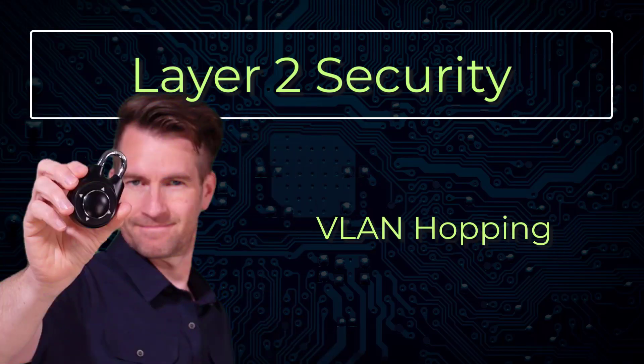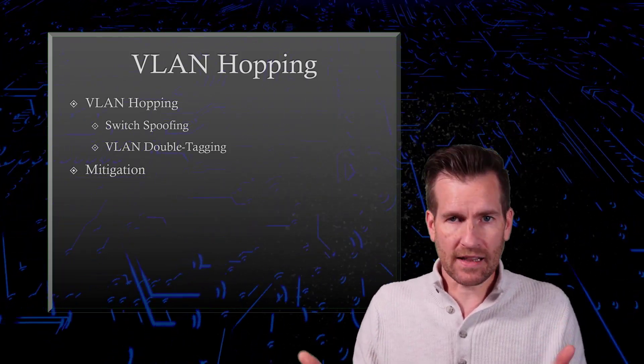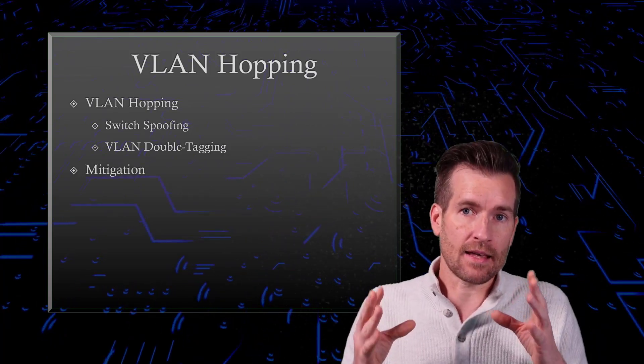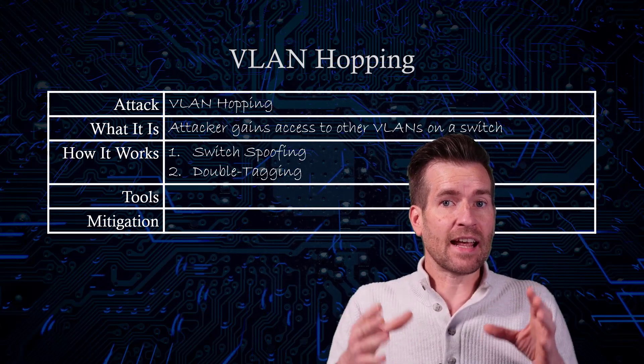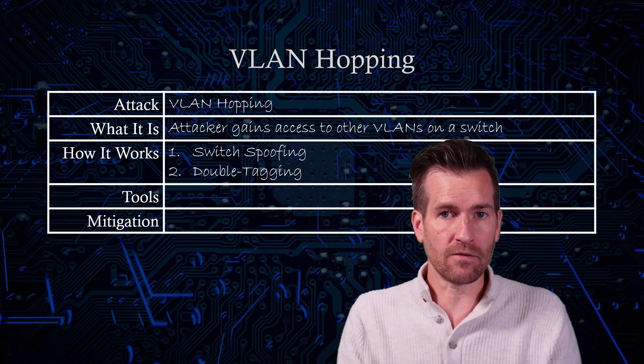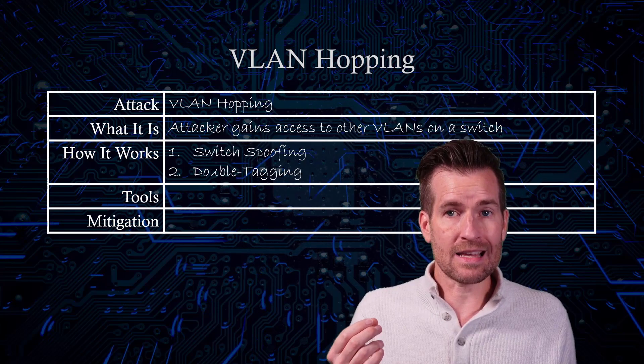One of the biggest reasons why we set up VLANs on our network is so that we can isolate certain VLANs to keep them more protected. Although an attacker can hop VLANs to jump to another VLAN. In this video, we're going to go over VLAN hopping and a couple ways that we can do it: switch spoofing and VLAN double tagging, and then how to mitigate against those two scenarios.